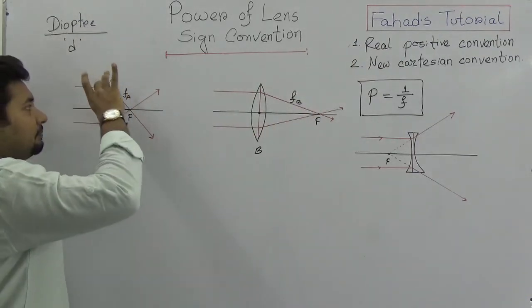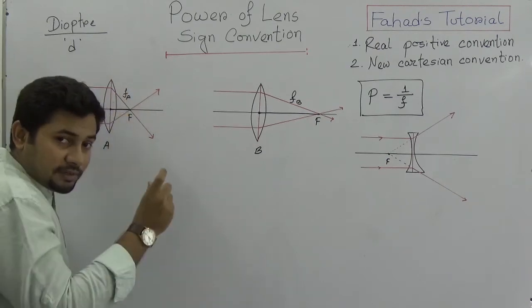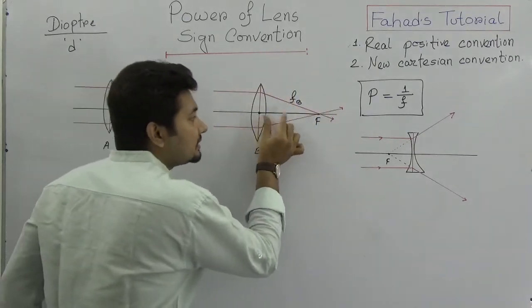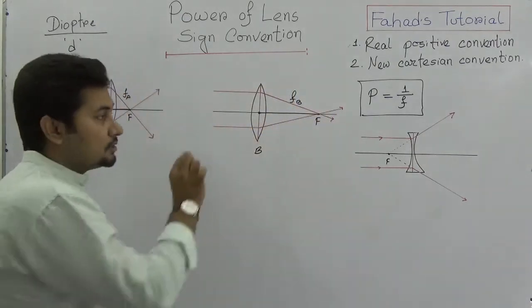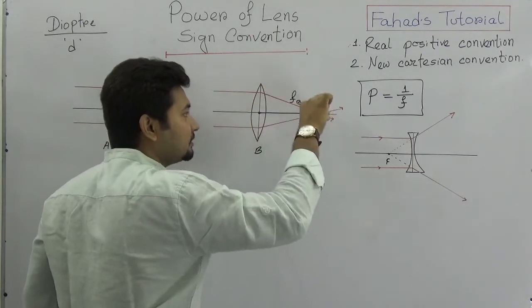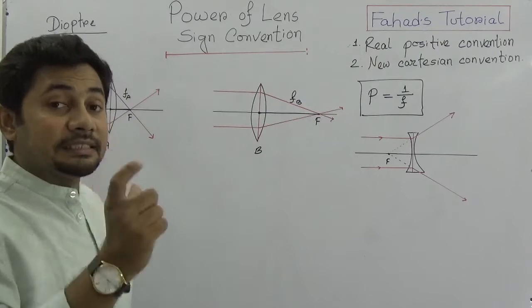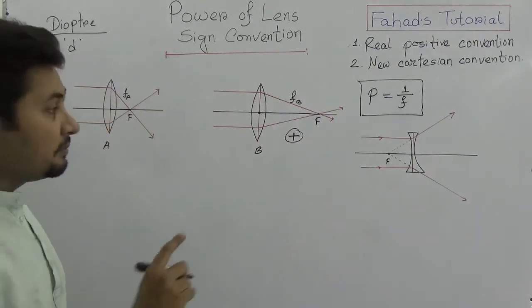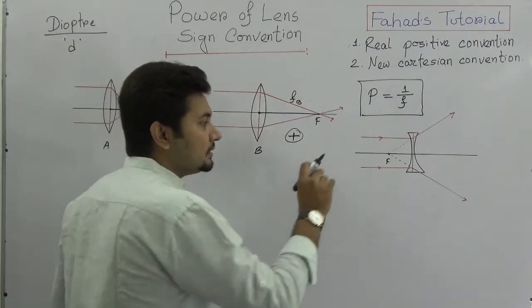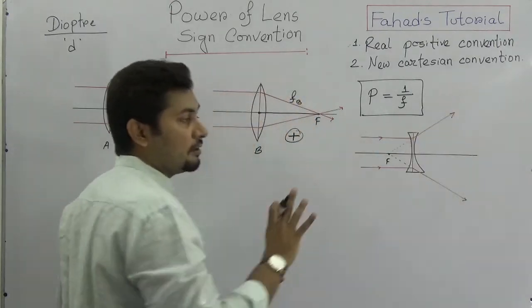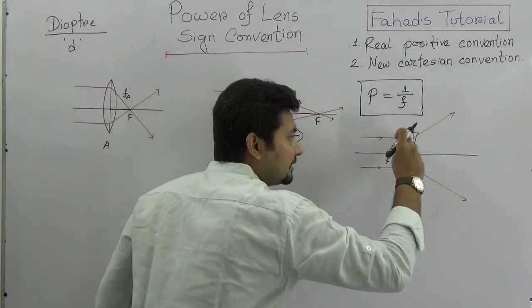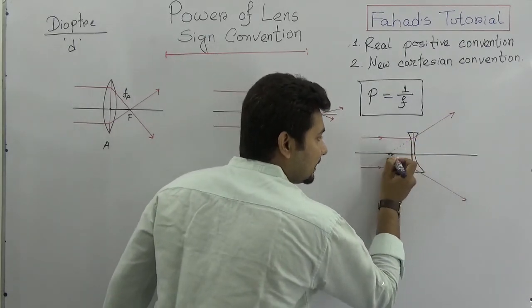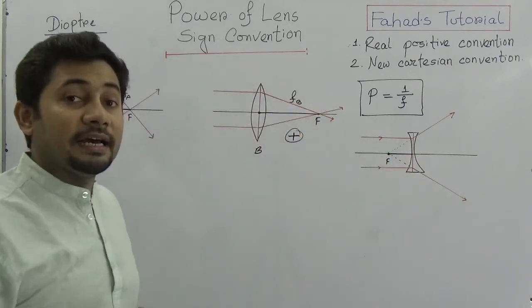When a parallel beam of light actually converges at a principal focus, that is a real distance — the light rays actually travel and traverse that distance. This distance is expressed as positive. But in the case of a concave lens, the rays are diverging from the lens and they appear to meet on the other side, so that distance is measured as negative.